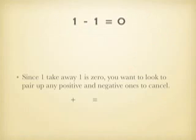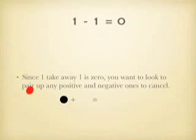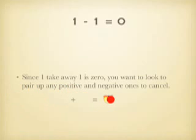Now, this may feel obvious that 1 minus 1 is 0. Since 1 take away 1 is 0, you want to look at pairing up any positives or negatives to cancel. So 1 plus negative 1 — pair them up and they cancel. So that gives me 0.